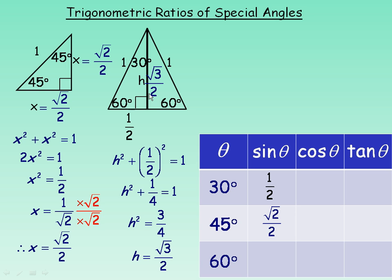For the sine of 60°, we use the 30-60-90 triangle. The 60° angle has an opposite side of root 3 over 2, divided by the hypotenuse of 1. So root 3 over 2 divided by 1 is root 3 over 2. That's the exact value for sine of 60°.